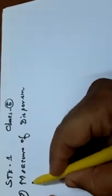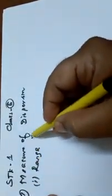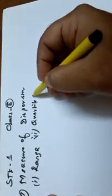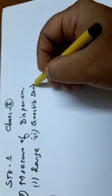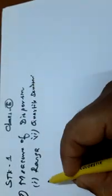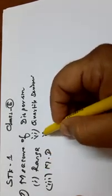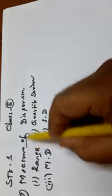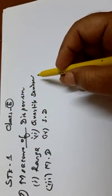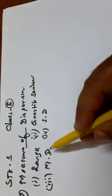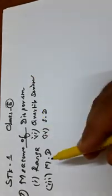First: range. Second: quartile deviation. Third: mean deviation. Fourth: standard deviation. Measures of dispersion — there are 4 types: range, quartile deviation, mean deviation, standard deviation.